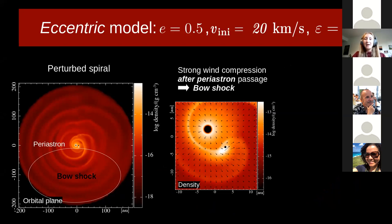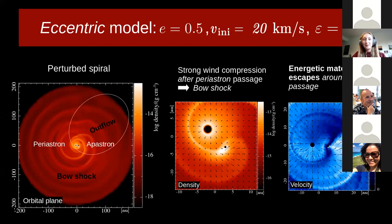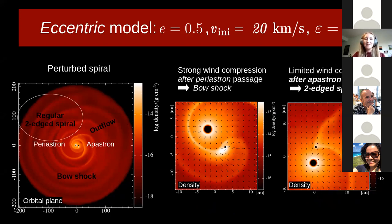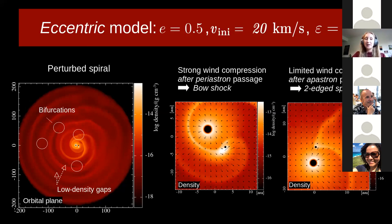The wind companion interaction in these models is strongest around periastron passage, where the orbital separation is minimal, and this results in the formation of a bow shock after periastron passage. Then around apastron, the path of the companion changes drastically as the orbital separation starts to decrease again, and this creates an outflow of the energetic material that was located within the post-shock, and this deforms the upper right part of the orbital plane. After apastron, the wind compression around the companion is limited again because of the large orbital separation, so therefore a broadening two-edged spiral forms until the companion passes again at periastron passage and starts to compress more material around it again. Because of this strong variation in the inner wind structure, these low density gaps and bifurcations arise.